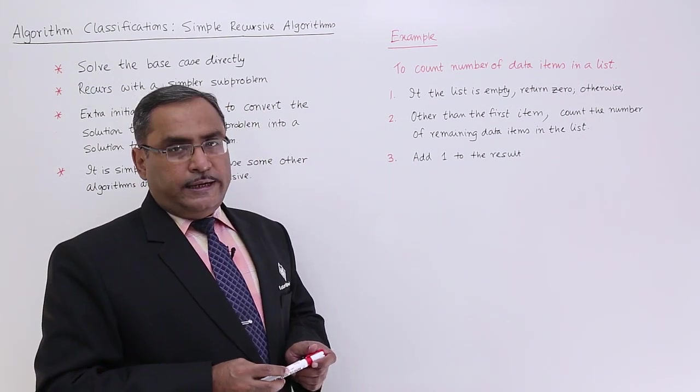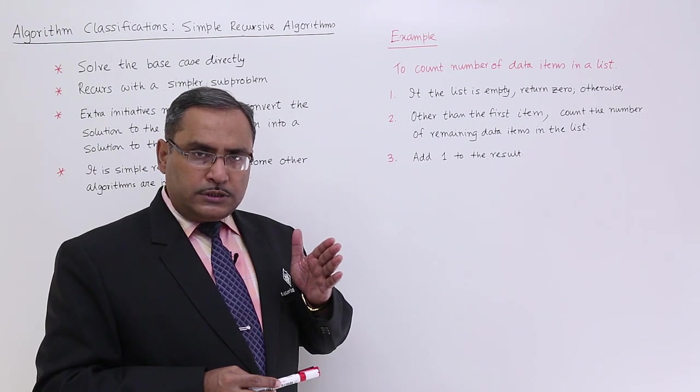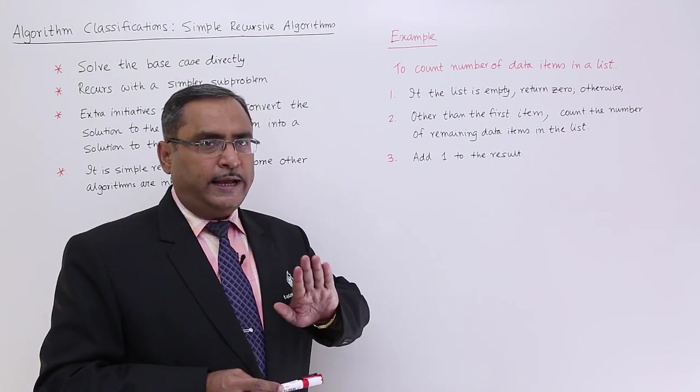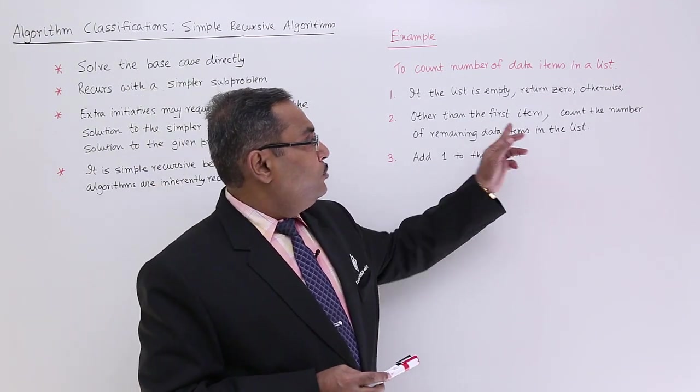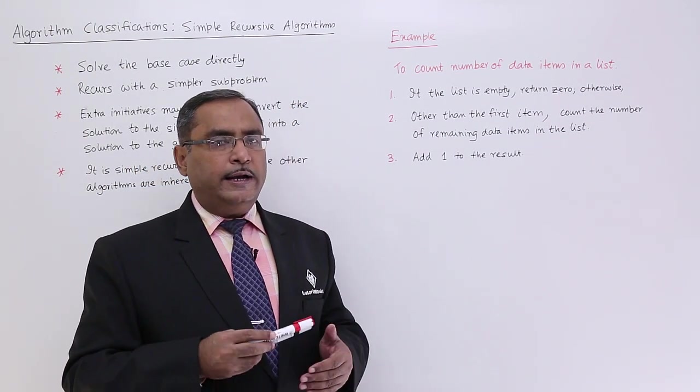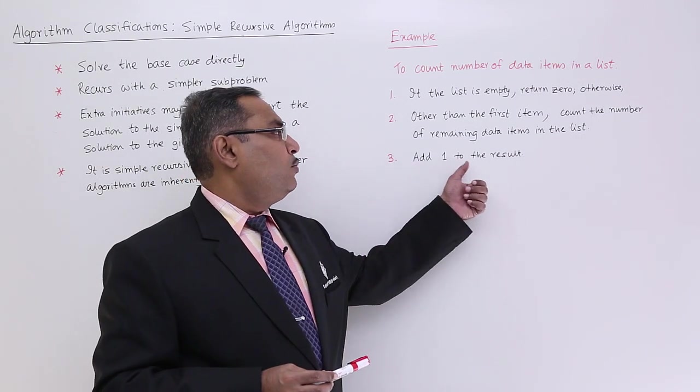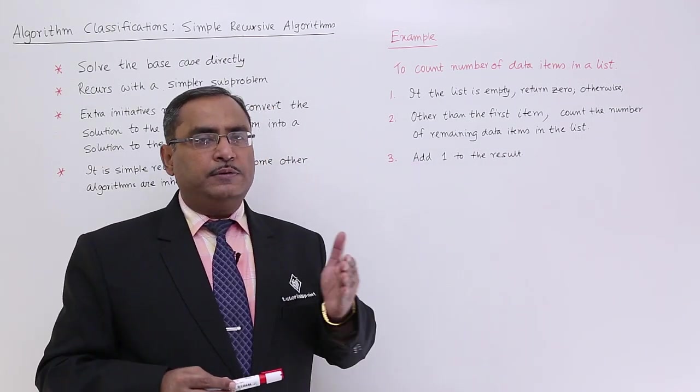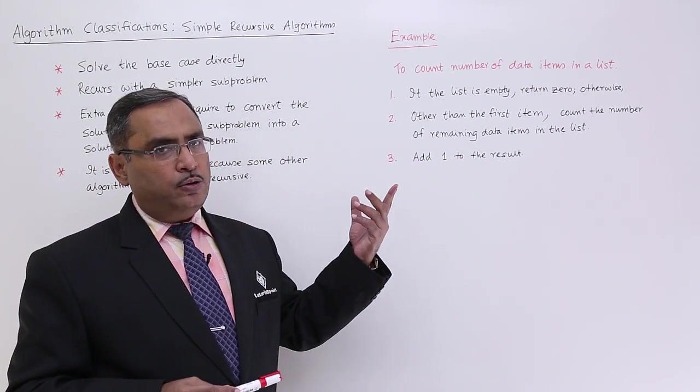Other than the first item, that means if you consider the first item, I am taking the first item away. Count the number of remaining data items in the list, and if we can count the number of remaining data items in the list, then add one to the result because the first item count will be added and that value will be returned.